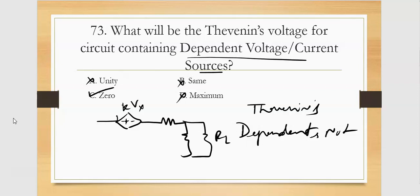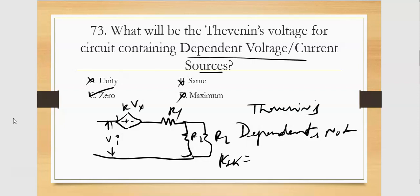In the circuit with R2, R1, and dependent source k times Vx, when we find the Thevenin resistance RTH and Thevenin voltage VTH, the dependent voltage sources go to zero, making the Thevenin voltage zero. So the correct Thevenin voltage is zero.